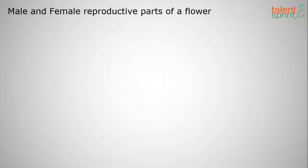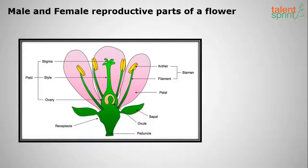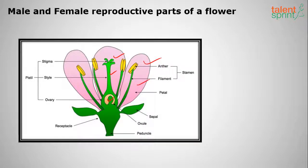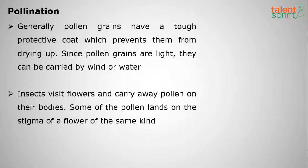Looking at the combined diagram of male and female reproductive parts: the pistil has stigma, style, and ovary; the stamen has the anther and filament. The petals of the flower and the green leaves called sepals are also visible.